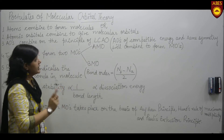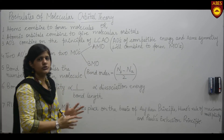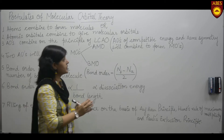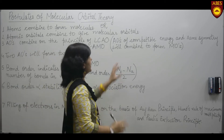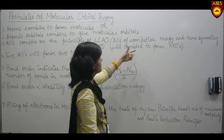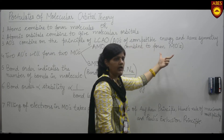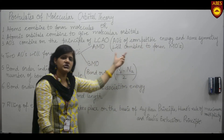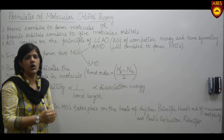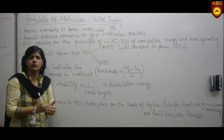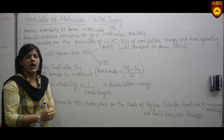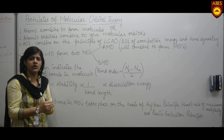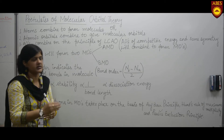Linear combination of atomic orbitals to form molecular orbitals takes place if atomic orbitals have compatible energy and same symmetry. Compatible energy means the two orbitals which are combining to form the molecular orbital are more or less of equal energy, and they should not have a very large energy difference.